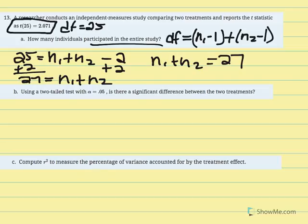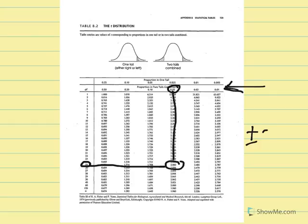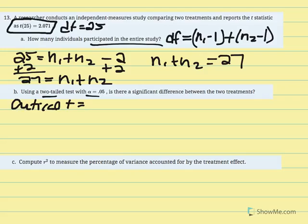Next, using a two-tailed test with alpha equal to 0.05, we find the critical t using our t distribution with degrees of freedom 25. In the t distribution, degrees of freedom 25 and the two-tailed column at 0.05 intersect to give a critical t of plus or minus 2.060.